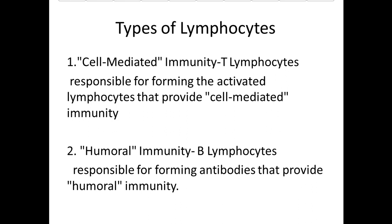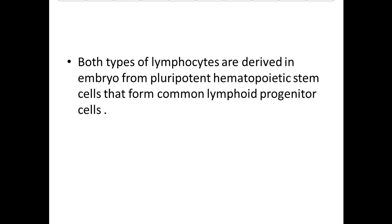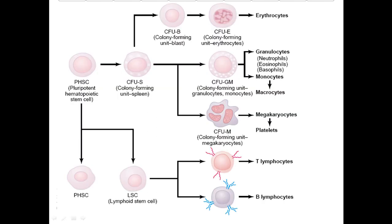Types of lymphocytes: T-lymphocytes are responsible for forming activated lymphocytes that provide cell-mediated immunity, while B-lymphocytes are responsible for forming antibodies that provide humoral immunity. Both types are derived in the embryo from pluripotent hemopoietic stem cells that form common lymphoid progenitor cells. From the pluripotent hemopoietic stem cell, lymphoid stem cells are produced and differentiated into T-lymphocytes and B-lymphocytes.